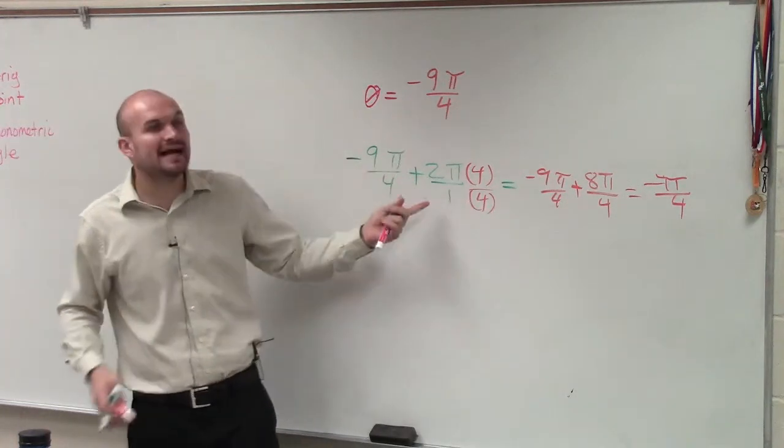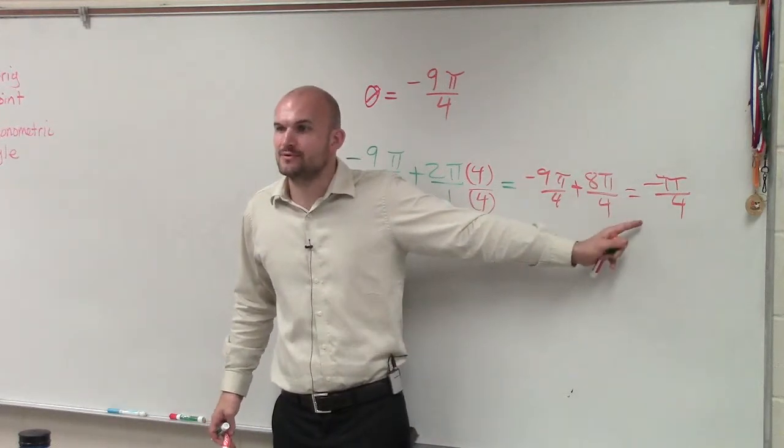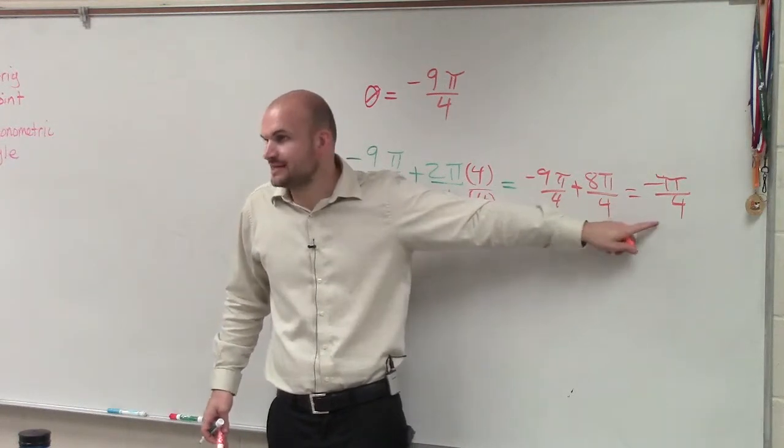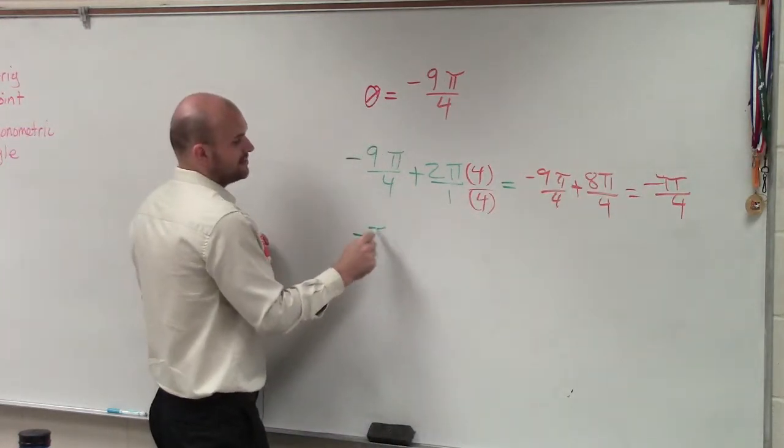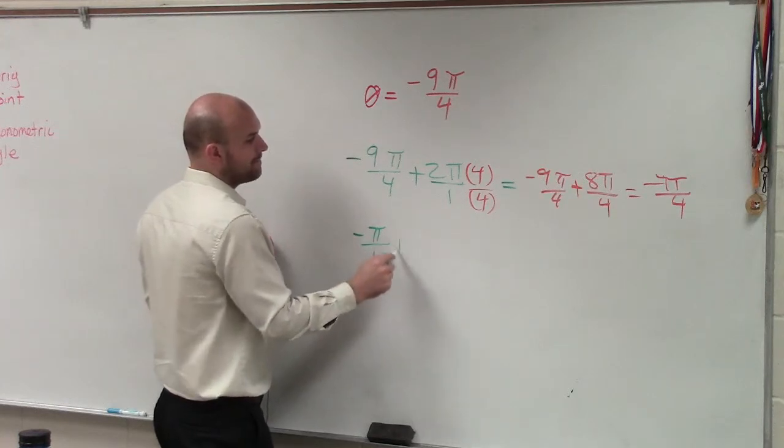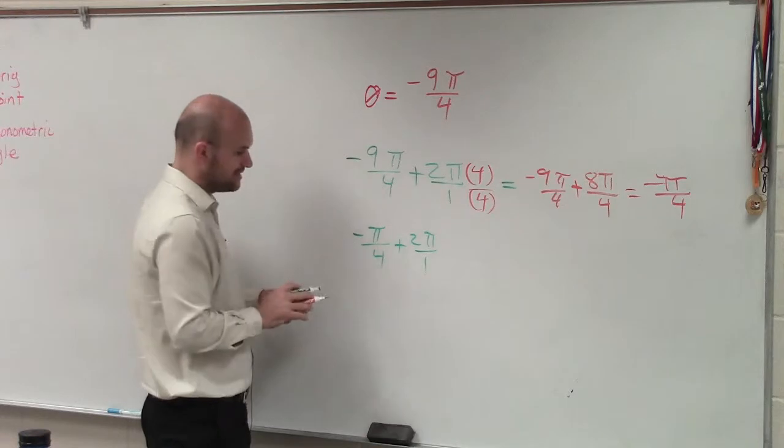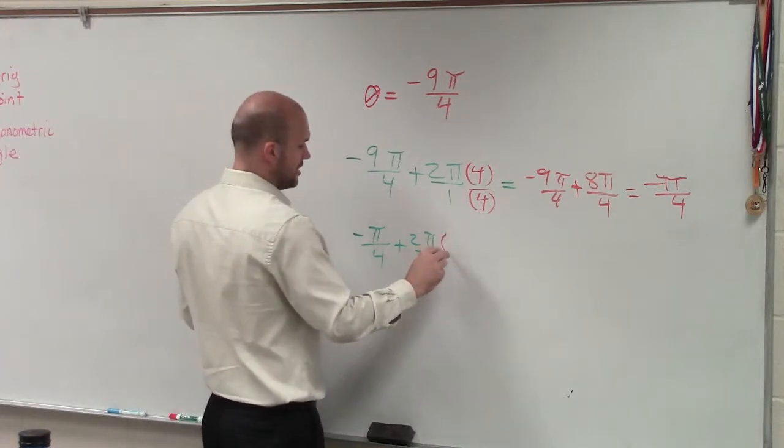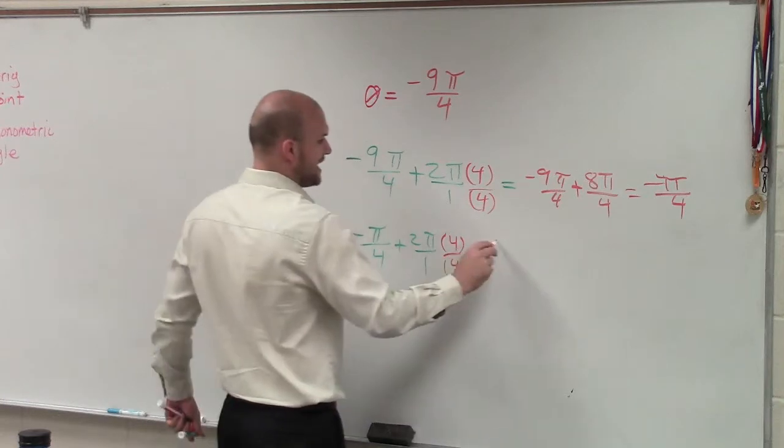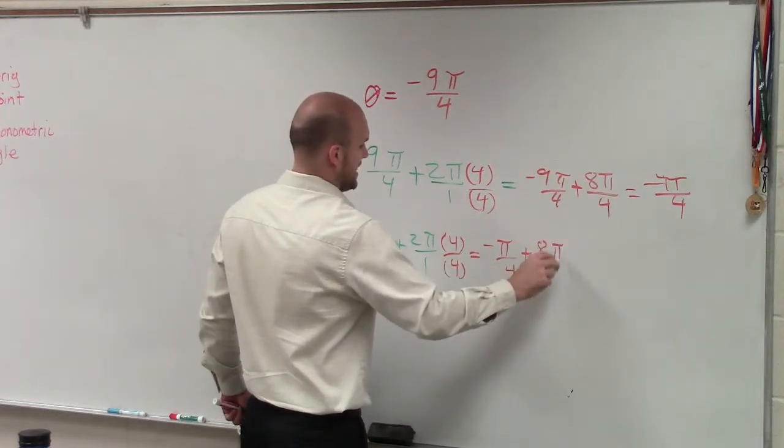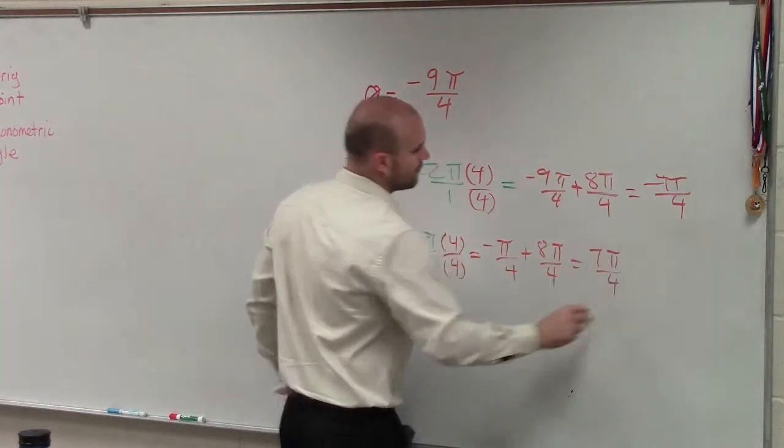So in this case, when I added 2π, that just gives me a larger negative value. I'm just going to keep that. Then if I take this and I add 2π again to it, so negative π over 4 plus 2π, then I'd multiply this again by 4 over 4. That's going to give me now negative π over 4 plus 8π over 4, which equals 7π over 4.